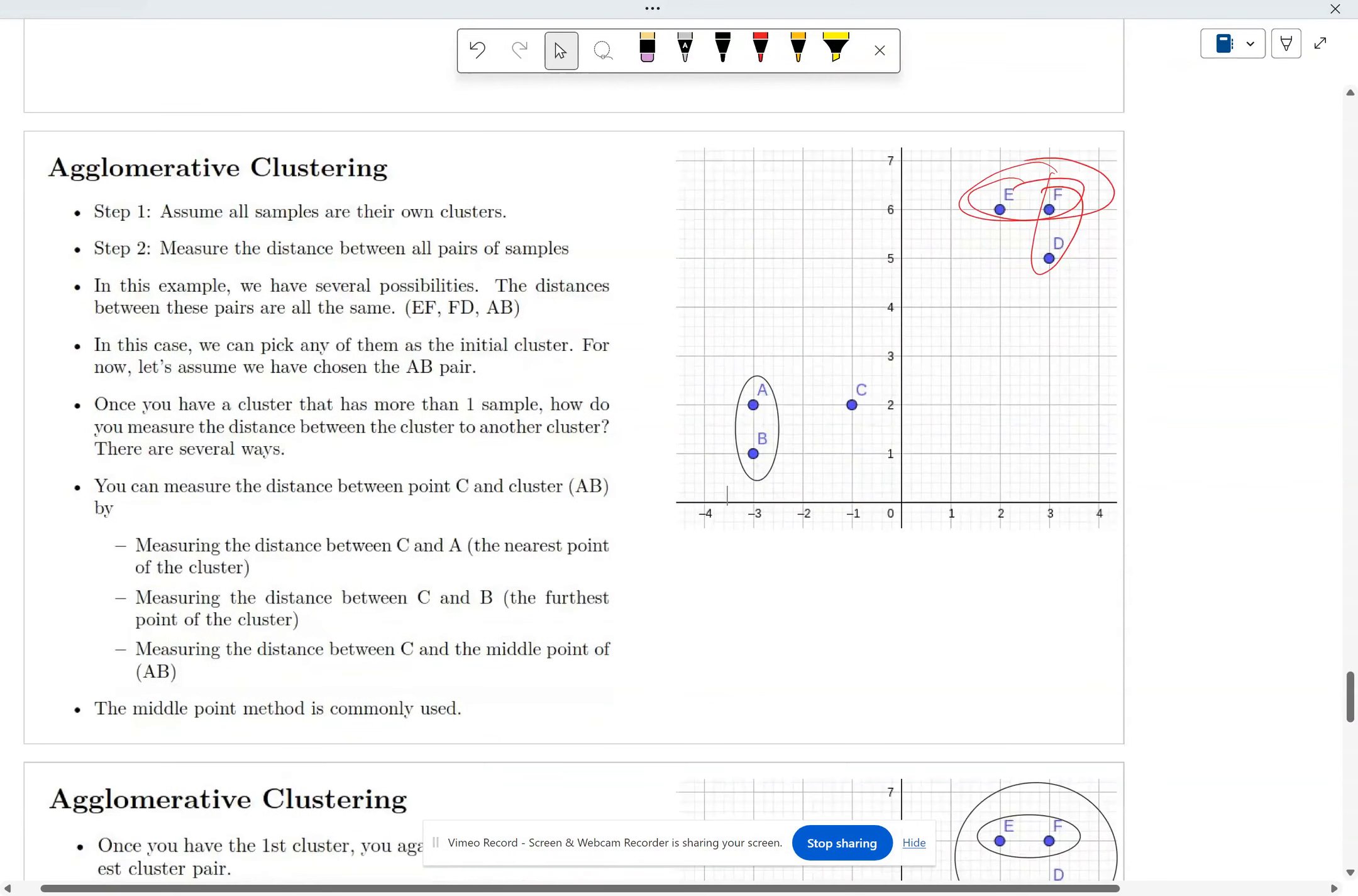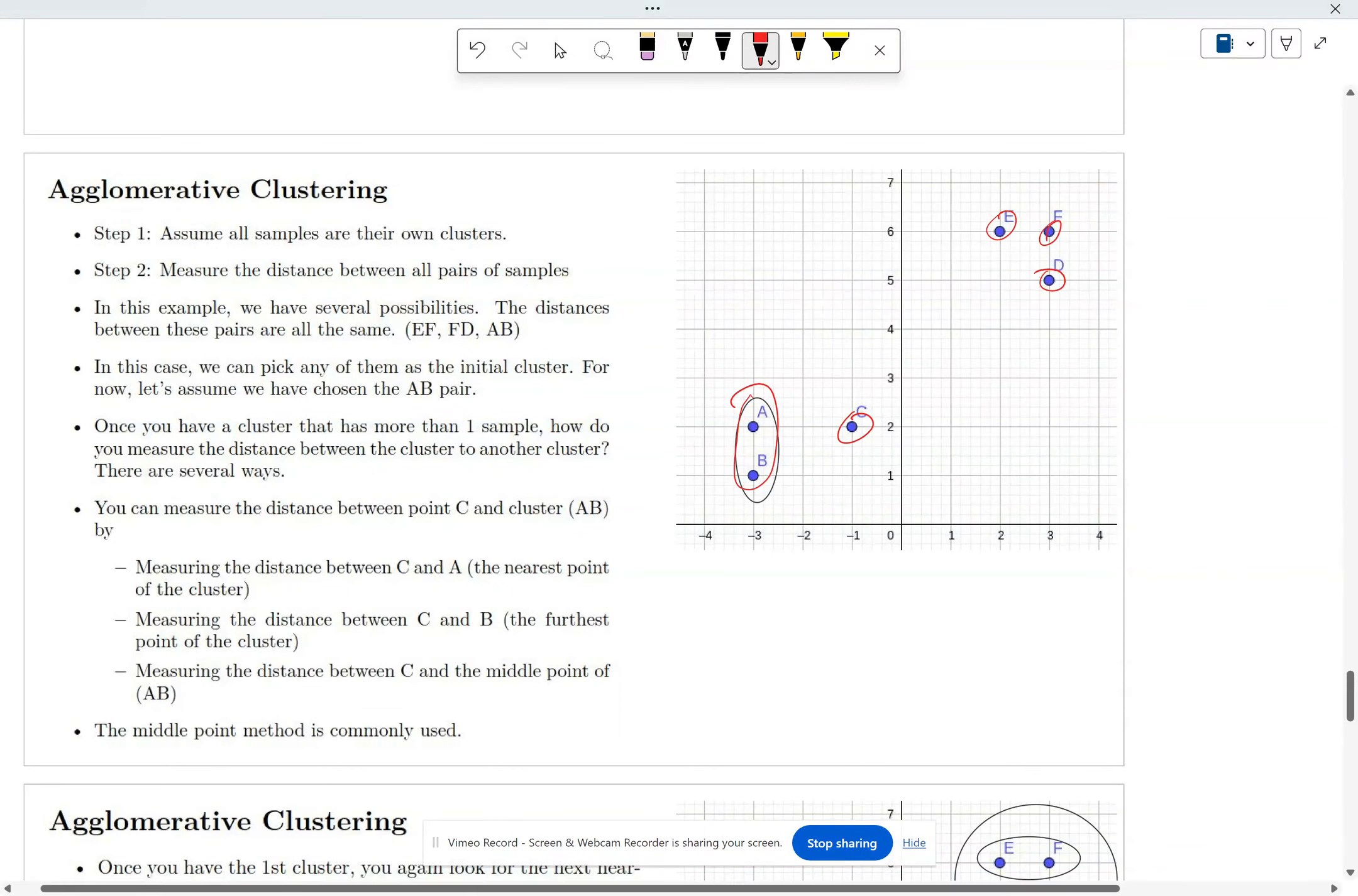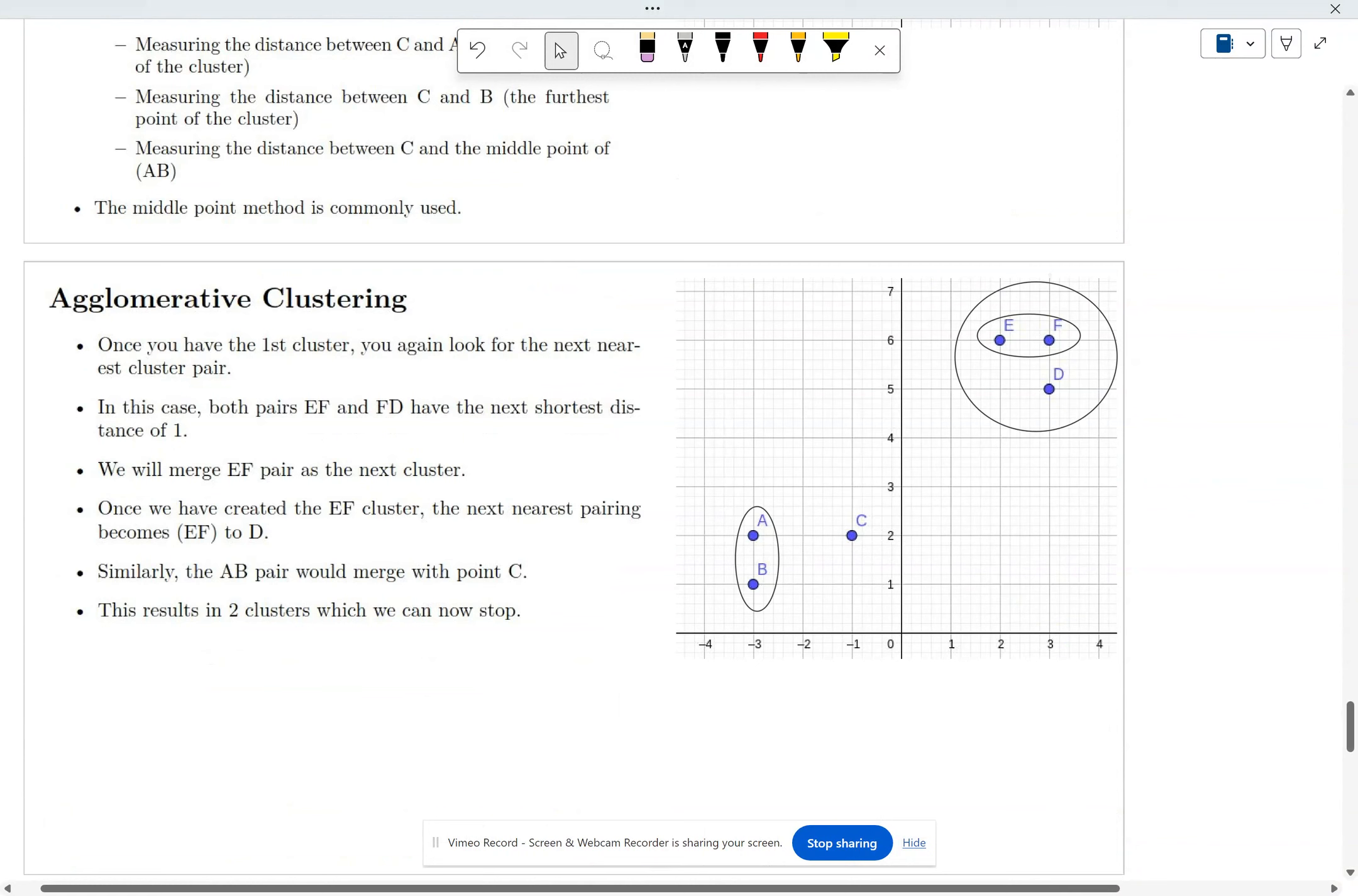Now once you have this cluster, this is still a cluster. You now go do the same thing again and essentially identify the two clusters that are closest to each other. And in this particular case, E and F are going to be closest. Or you could have picked this one too, but idea is the same. So now you have this cluster and this cluster.